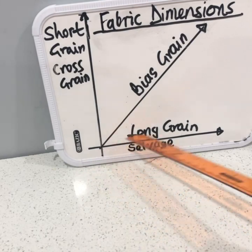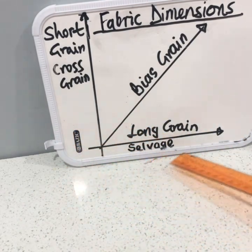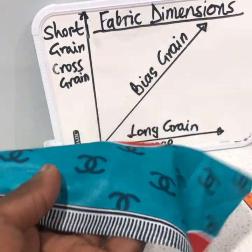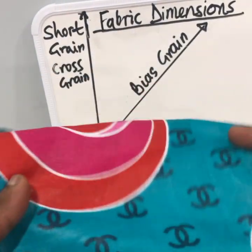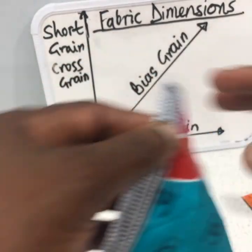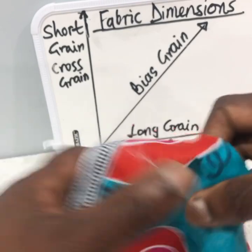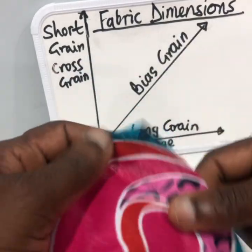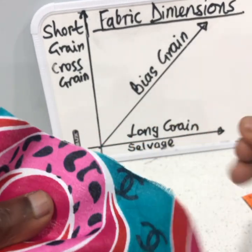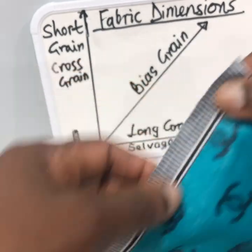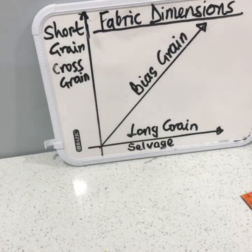The long grain is always parallel to the selvage — you need to identify what the selvage is. For example, on this African fabric, the bottom is the selvage. One thing about the selvage: you cannot pull thread out from it — when you try, nothing will come out. You can always cut and pull thread when it comes to the other parts of the fabric, but not the selvage. It's always sealed.